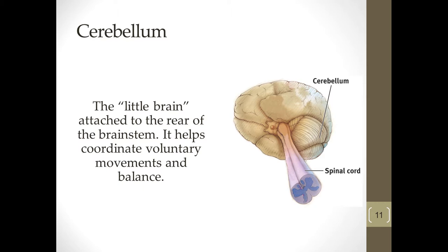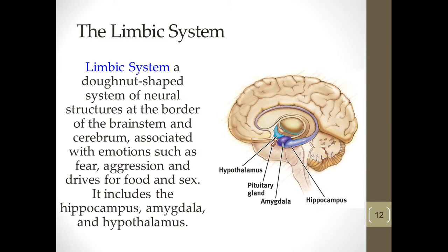The next layer up is the limbic system. The limbic system is not unique to humans — it exists in a lot of species because essentially what it does is coordinate vital functions like memory formation, fight or flight reactions, and the drive for sex. Let me just recap: we've got the brainstem, behind it is the cerebellum, and then above all of that is the limbic system. I'm going to talk about three parts: the hippocampus, the amygdala, and the hypothalamus.